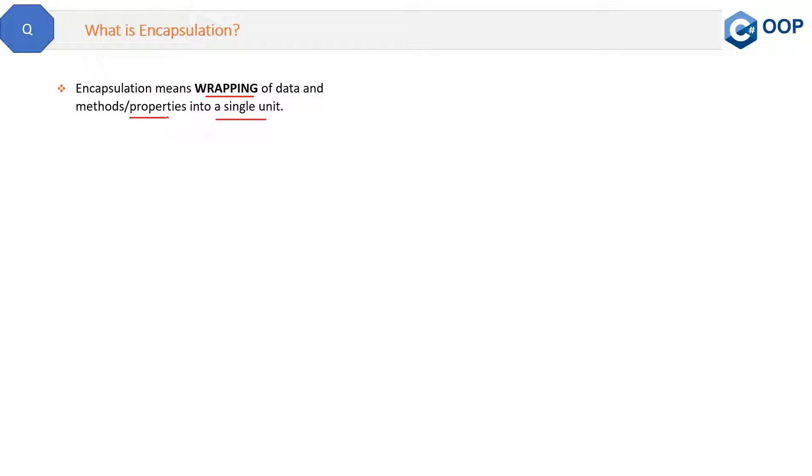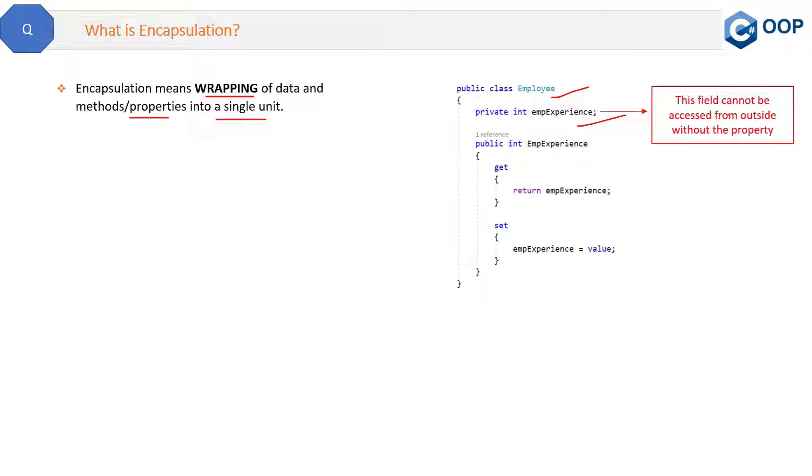Let's try to understand encapsulation with the help of a code example. Here is an Employee class which has a field empExperience, which is basically employee experience. Remember, in C# when we say field, then it represents the data only. So all the data will be stored in the form of fields in the applications. Now this field cannot be accessed from outside this class without the property. Why? Because this field is private.